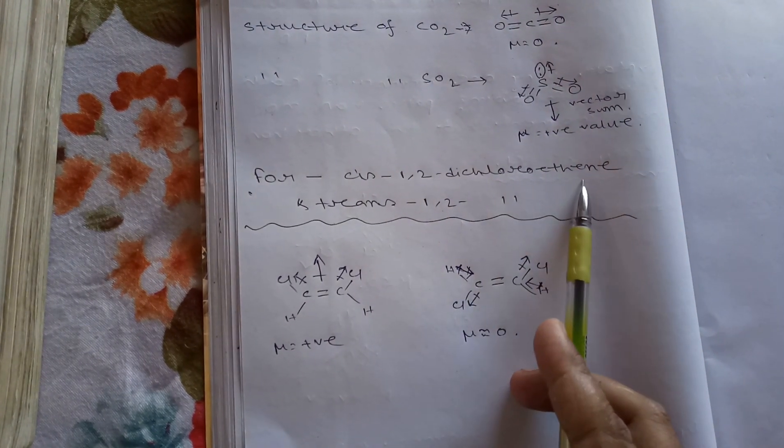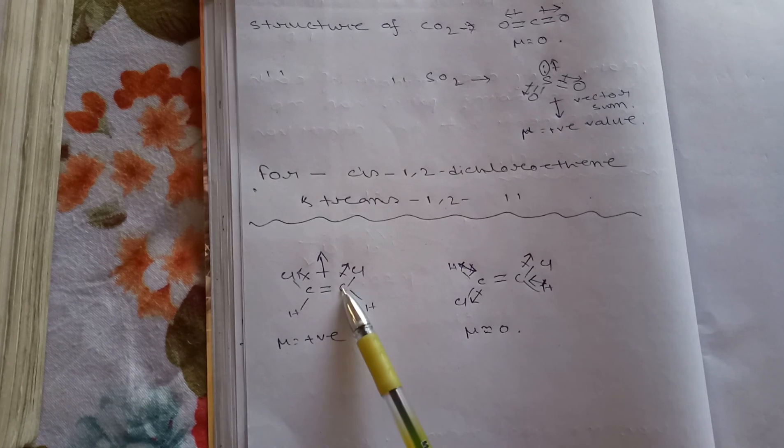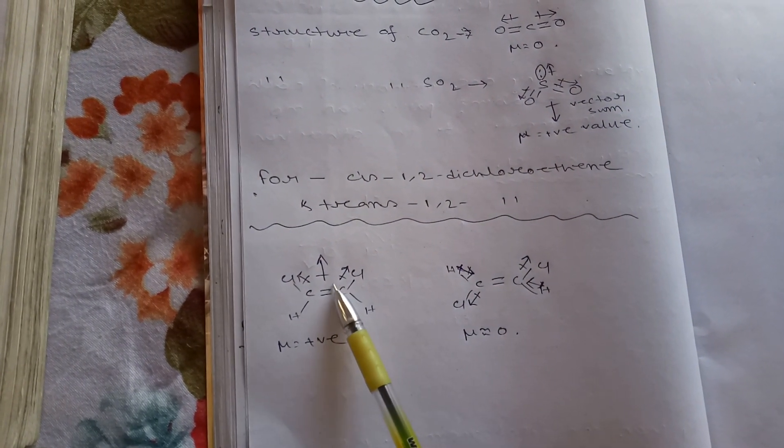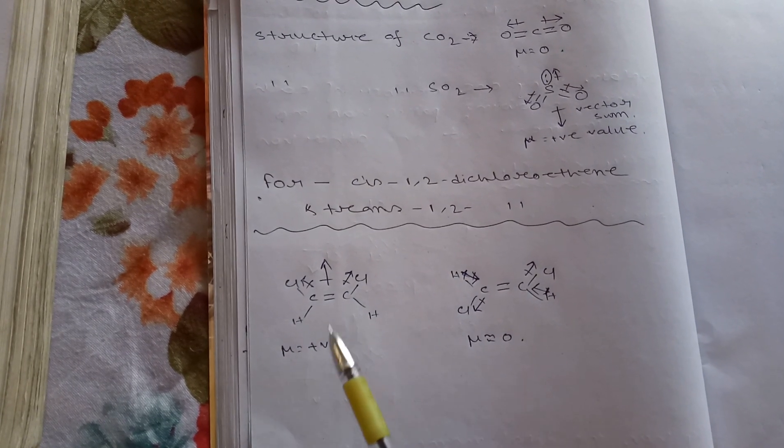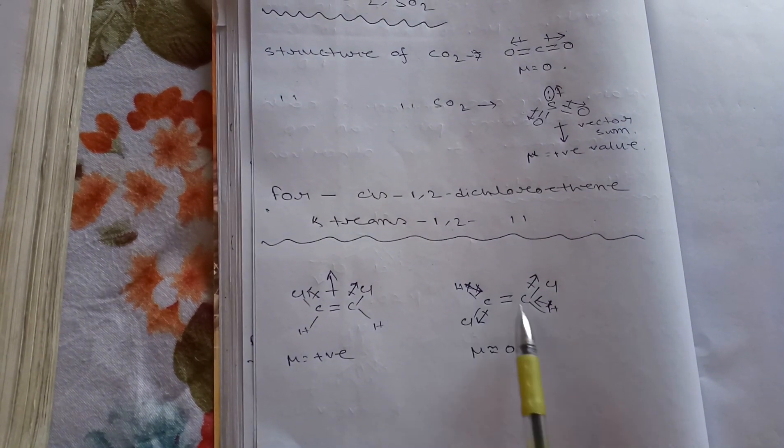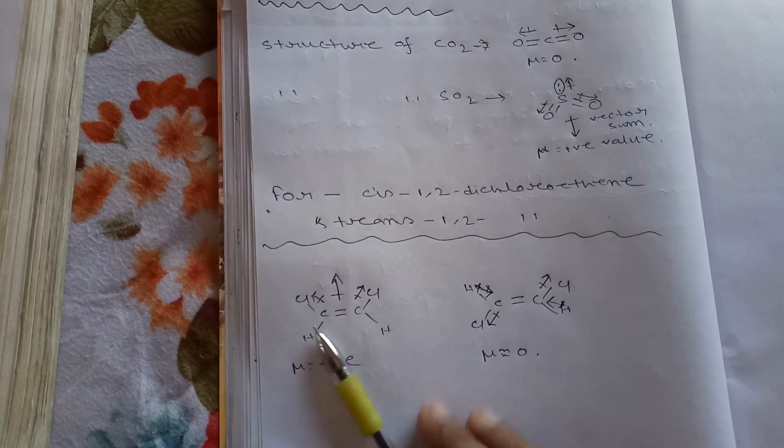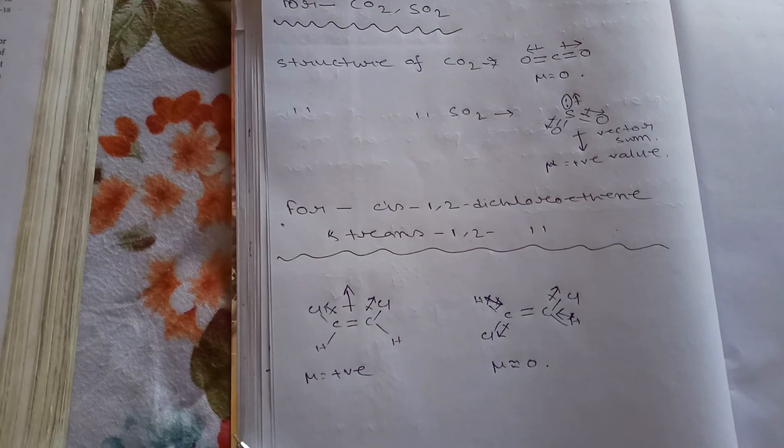For cis-1,2-dichloroethane and trans-1,2-dichloroethane, this is our cis and this is our trans. In cis, the resulting moments have no cancellation, so it has positive dipole moment. In trans, they cancel each other and it has no dipole moment. Okay student, thank you. Please subscribe and share this video. Thank you.